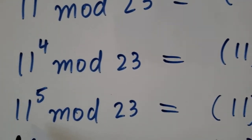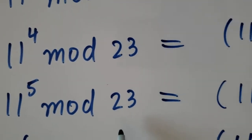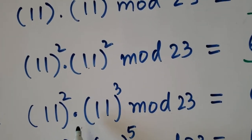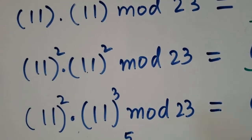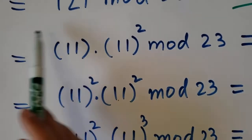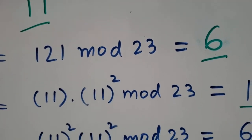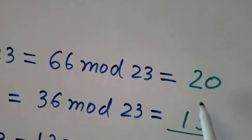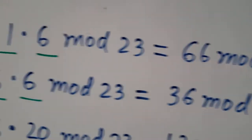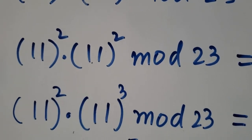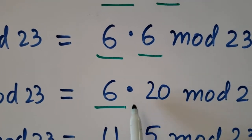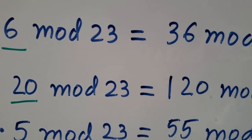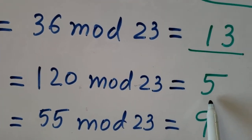Now 11 to the power 5 mod 23 is the combination of 11 squared times 11 cubed mod 23. 11 squared is 6, which we already calculated, and 11 cubed we calculated as 20. So 6 times 20 mod 23 is 120 mod 23, which is 5.